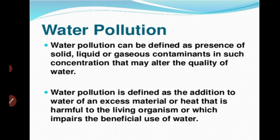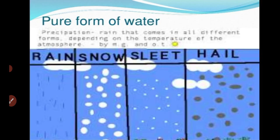Water pollution is also defined as the addition to water of excess material or heat that is harmful to living organisms or which impairs the beneficial use of water.